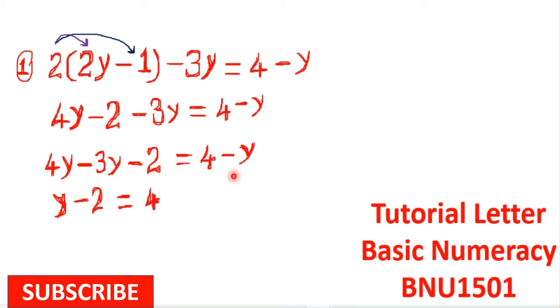Now from there, I will group this y and also this y because they both have a relationship. I will write y, and then this y, when it goes to the left-hand side of the equal sign, will become +y.